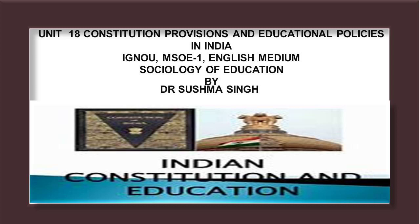Article 15 prohibits discrimination on grounds of religion, race, caste, sex or place of birth. The third clause of this article empowers the state to make special provisions for women and children, and this includes education too. Now let us move to the next point: educational policies.